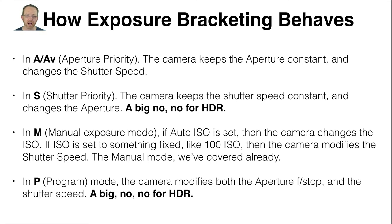How exposure bracketing behaves depends on the mode you're in. In aperture priority, the camera keeps the aperture constant and changes the shutter speed. In shutter priority, the camera keeps the shutter speed constant and changes the aperture — a big no-no for HDR. In manual exposure mode, if auto ISO is set, the camera changes the ISO. If the ISO is set to something fixed like ISO 100, the camera modifies the shutter speed. You must set your camera up to your native ISO, which is ISO 100.